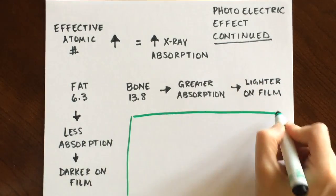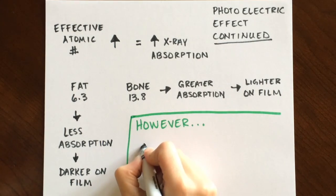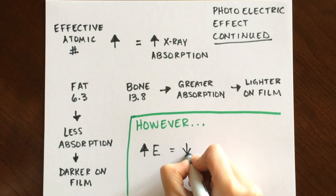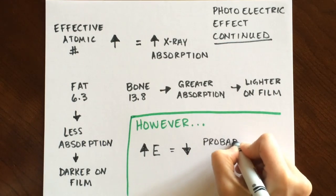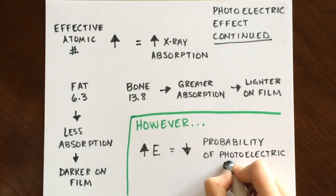However, increasing the energy of the x-rays decreases the probability of the photoelectric effect occurring. You can think of it this way. If you set your kVp too high, you will have very little absorption and your radiograph will be too black to read.